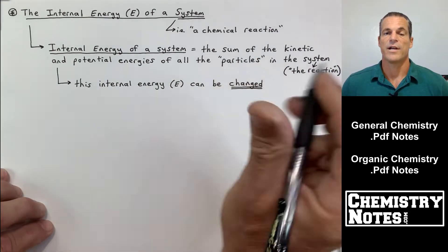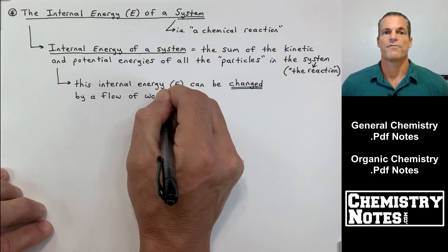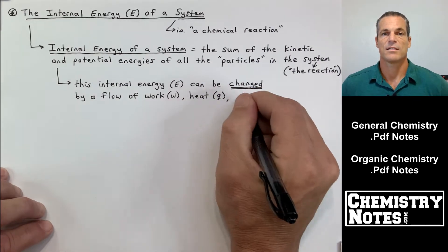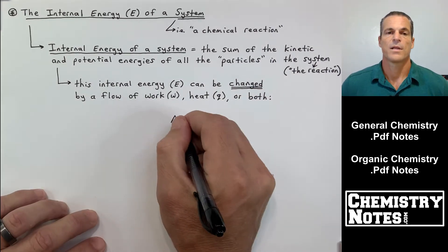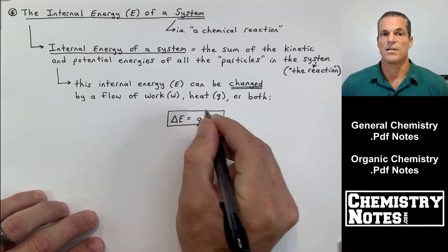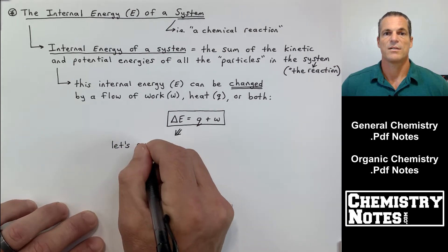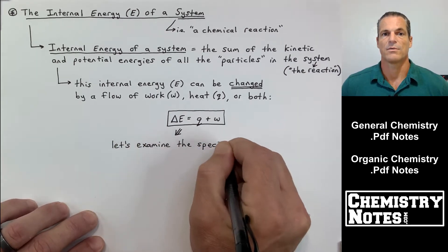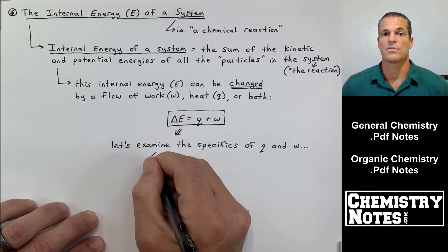This internal energy E can be changed by a flow of work W, heat Q, or both. In other words, delta E — the change in that energy — is equal to Q plus W. Energy equals heat plus work. So let's examine the specifics of Q and W: Q being heat, W being work.